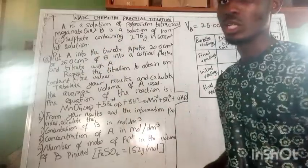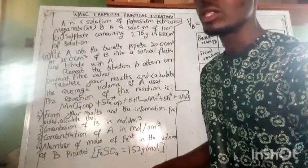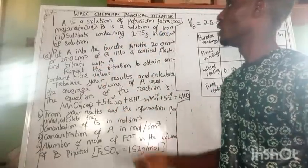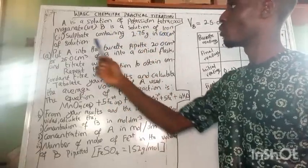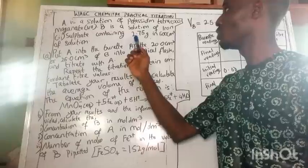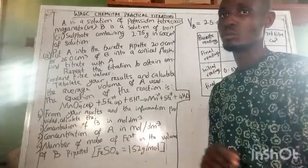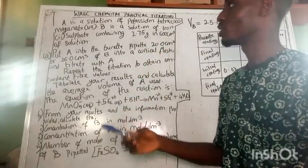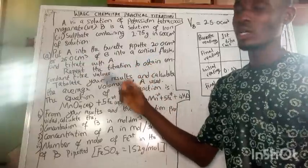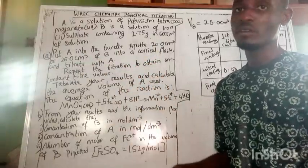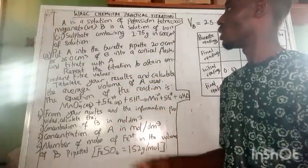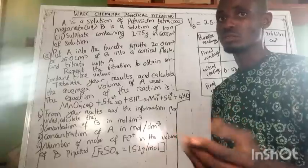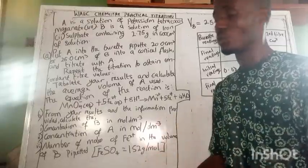Solution A is a solution of potassium permanganate (KMnO4). Solution B is a solution of iron(II) sulfate, FeSO4, containing 2.75 grams dissolved in 500cm³. We are going to put A in the burette and titrate it against 20 or 25cm³ of B using a pipette, and repeat the titration about three times.